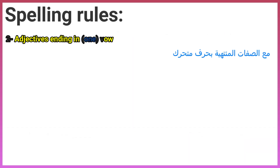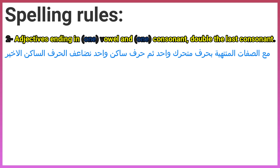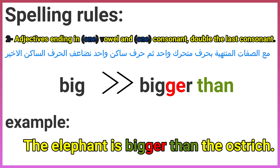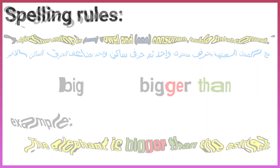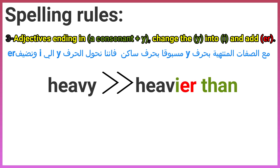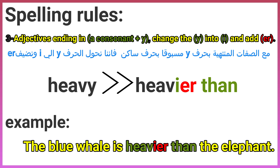Spelling rule two: adjectives ending in one vowel and one consonant — double the last consonant. For example: big → bigger than. Example: the elephant is bigger than the ostrich. Spelling rule three: adjectives ending in a consonant plus y — change the y to i and add er. For example: heavy → heavier than. Example: the blue whale is heavier than the elephant.